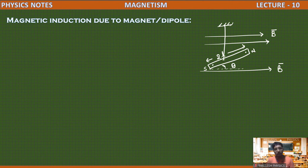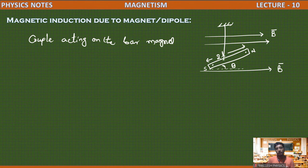When it is placed inside the magnetic field, a couple produces a turning effect in this bar magnet. That couple acting on the bar magnet is equal to MB sine theta, where M is the magnetic moment of the bar magnet and B is the magnetic field. So the couple C equals MB sine theta.